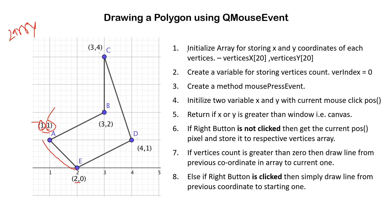The algorithm is straightforward. First, initialize arrays vertices_x and vertices_y for storing x and y coordinates of each vertex. Create a count index called num_vertices to track how many vertices are in the array. Then create a mouse press event method where x and y grab the position of the mouse click using the position method. We will not plot any point if the x or y coordinate is outside our canvas window.